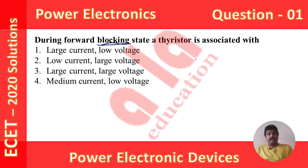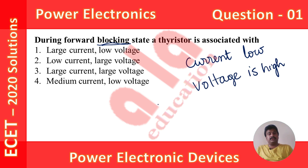So the answer is: the current is low and voltage is high. Out of the four options given, option number 2 — low current and large voltage — is the correct option. The answer is low current, large voltage. Now let us move to question number 2.